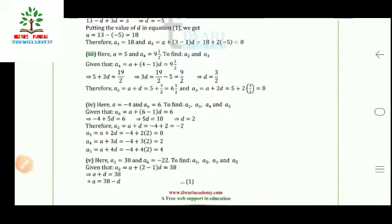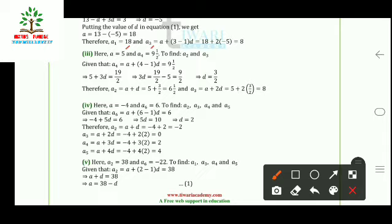In the third part, a = 5 and a₄ = 9½ are given; we need to find a₂ and a₃. Writing a₄ = a + 3d = 9½ and substituting a = 5, we solve to get d = 3/2. Since d is now known, a₂ = a + d and a₃ = a + 2d can be found easily. All these questions use just one formula.